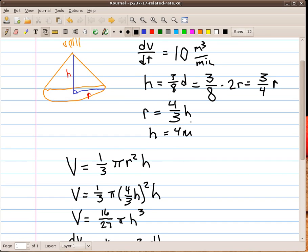Now, let me just take you back up here for a minute. If r equals 4 thirds h, and we differentiate both sides, dr over dt would equal 4 thirds dh over dt.